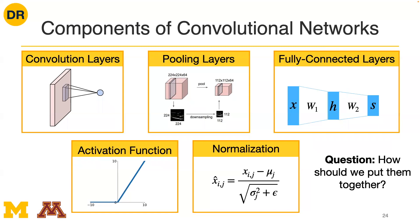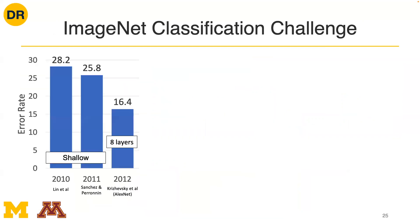That caps off the core components of convolutional neural networks: convolutional layers, pooling layers, fully connected layers, activation functions, and batch normalization. The big remaining question is how to combine these to perform perception tasks. To get intuition about this, we'll step through some ImageNet classification architectures that won the ImageNet challenge, to understand how researchers approached designing and combining these different layers.